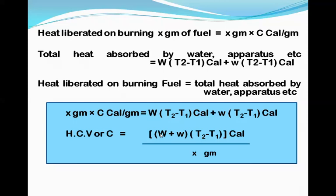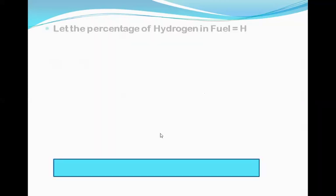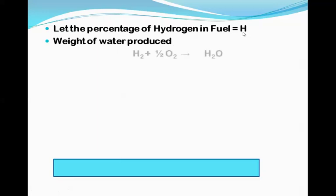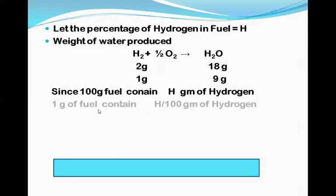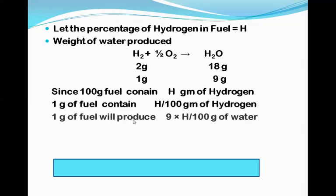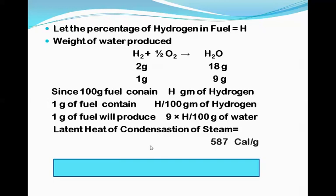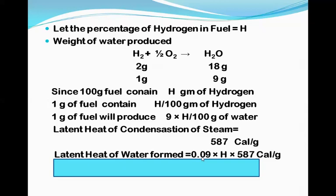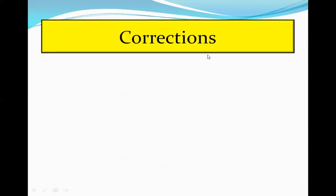This is how the higher calorific value is calculated. LCV can also be calculated: given percentage of hydrogen in the fuel as H, using H₂ + ½O₂ → H₂O (2g gives 18g water, so 1g gives 9g water), 1 gram of fuel produces 9 × H/100 = 0.09H grams of water. With latent heat of condensation of steam = 587 cal/g, latent heat of water formed = 0.09 × H × 587. Therefore: LCV = HCV − 0.09 × H × 587 calories per gram.